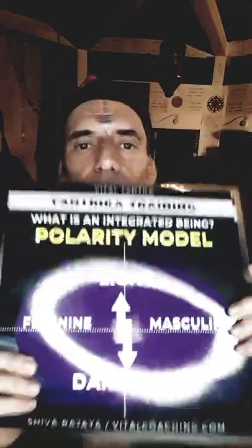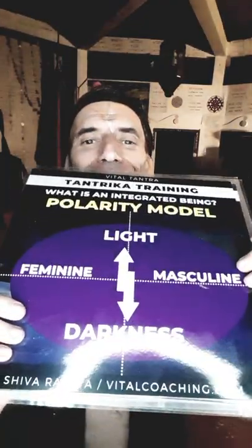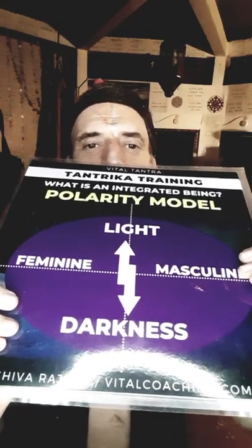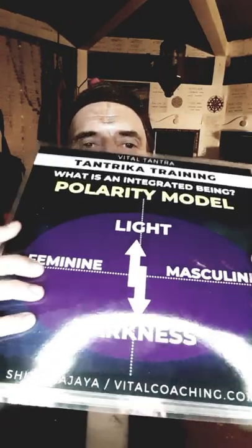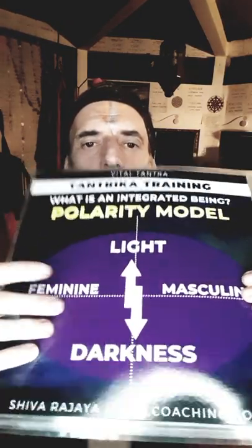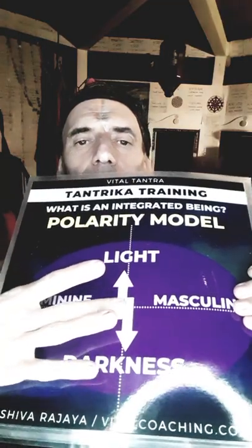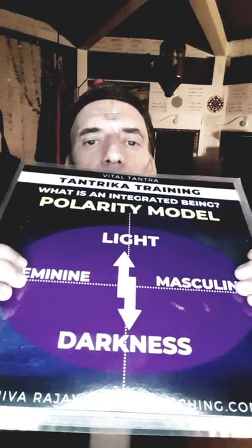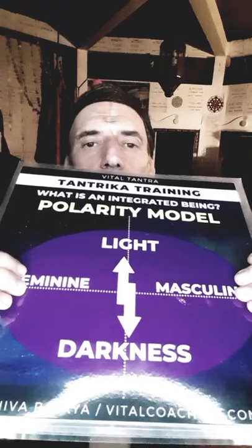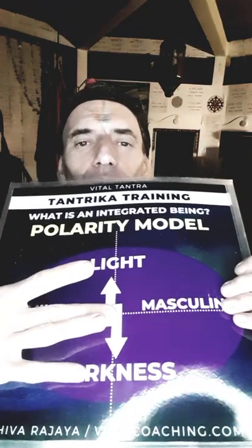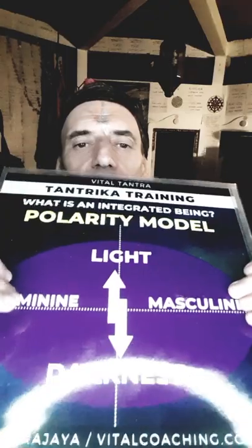You have this one as well — this is a polarity model. There is light and darkness, feminine and masculine. The goal is to be able to navigate from the very core, where there is a perfect balance of all those different qualities. This is what I call the resonance point, when you are at the very center of that.